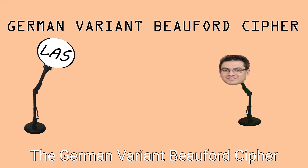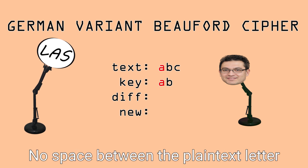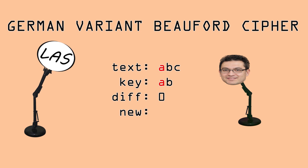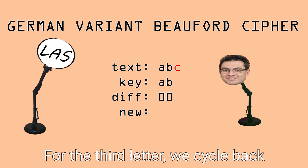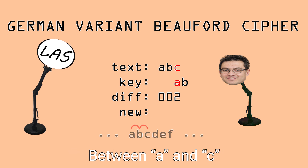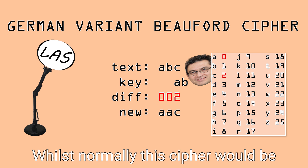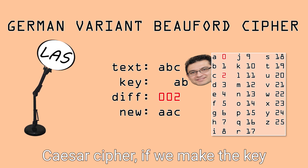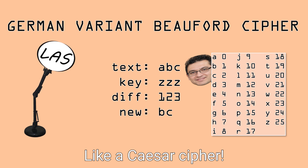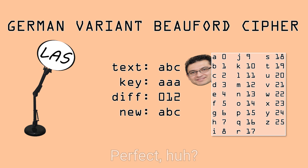Like what? The German variant Beaufort cipher encrypts by taking the difference of a letter and a letter in the key. In this example, there is no space between the plaintext letter and the letter in the key, so let's put down zero here. The same applies here. For the third letter, we cycle back to the first letter of the key. There is a difference of two between A and C. We turn these numbers into letters using the alphabet. Whilst normally this cipher would be more challenging to solve than a Caesar cipher, if we make the key all the same letter, it functions like a Caesar cipher. What's more, if all the letters are A, the text is completely unchanged.